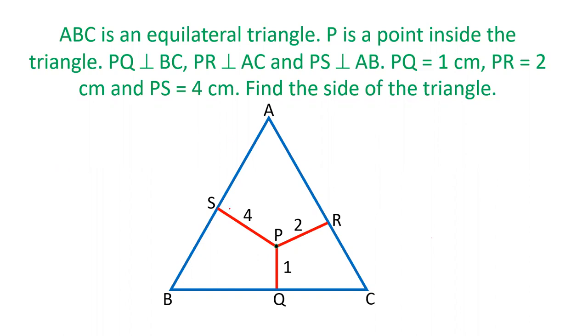In today's video, we are going to learn an interesting question in which there is an equilateral triangle given and there is a point P anywhere inside that triangle. Three perpendiculars are drawn from P on the sides of equilateral triangle: PQ = 1, PR = 2, PS = 4, and we have to find out the side of equilateral triangle.